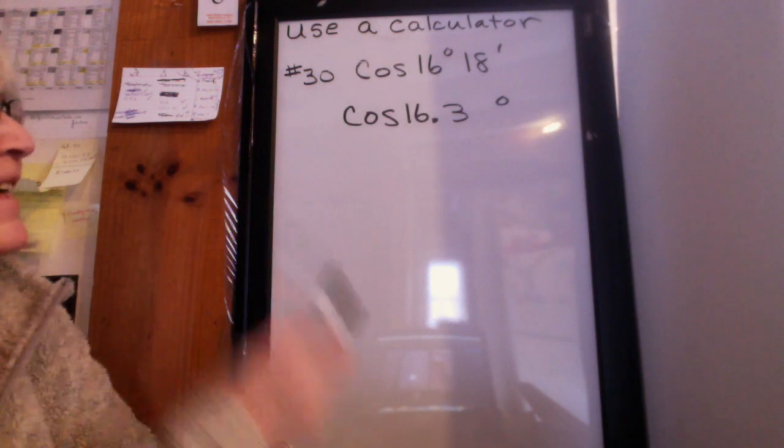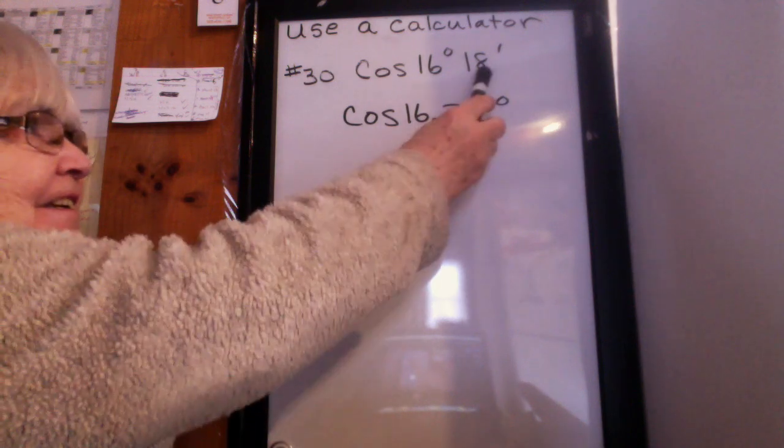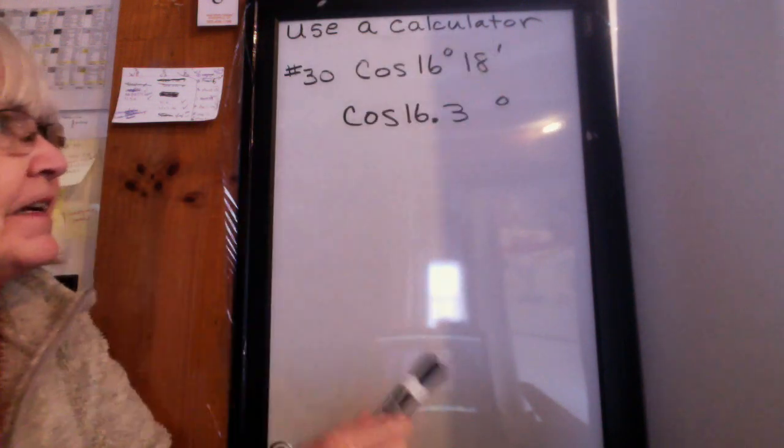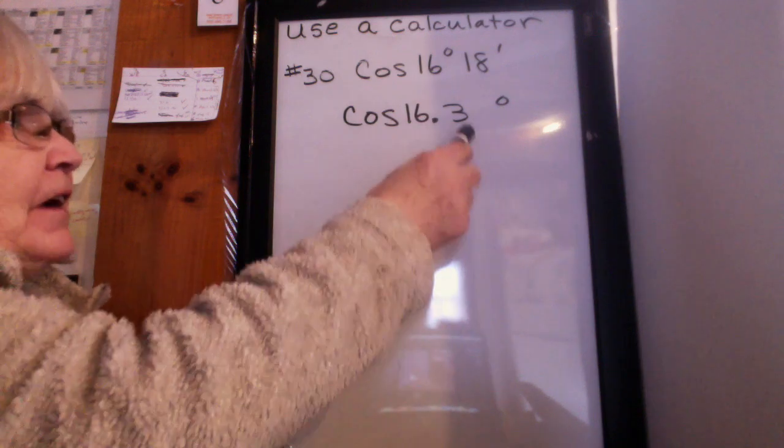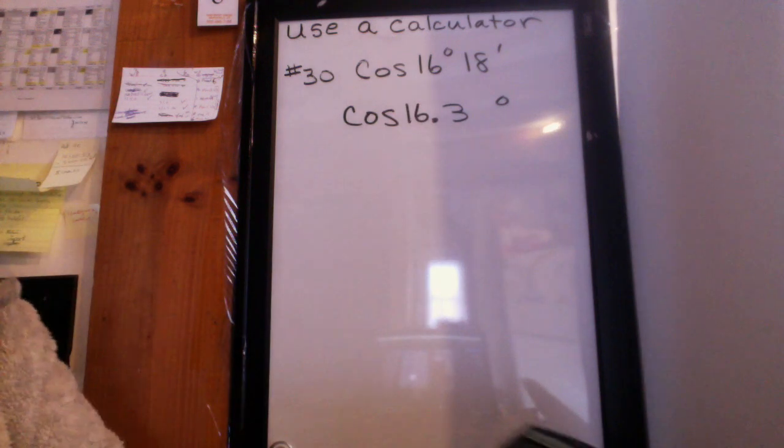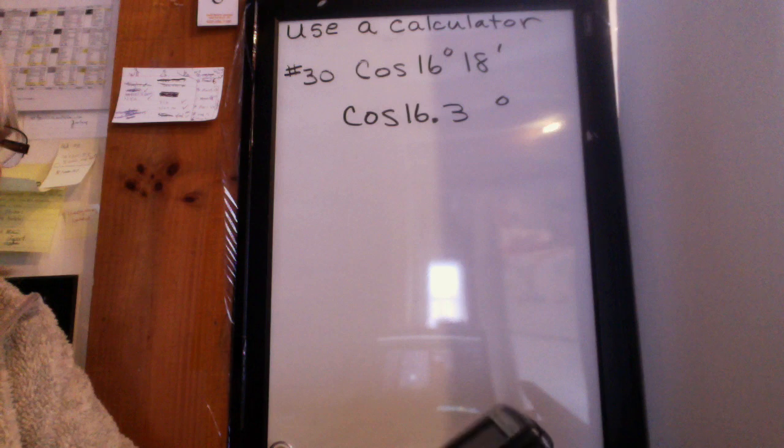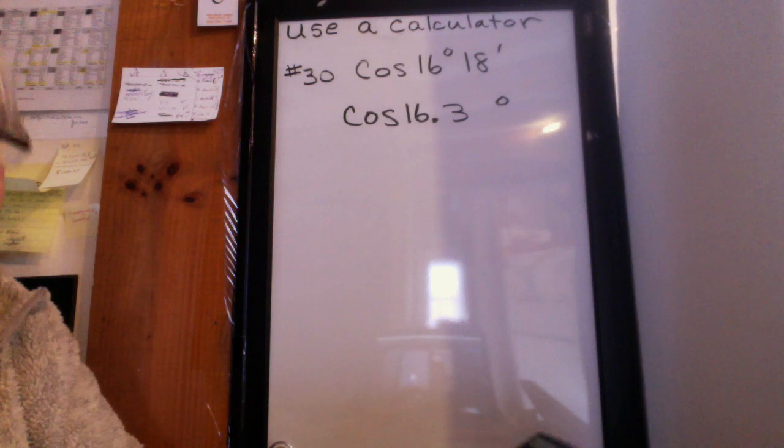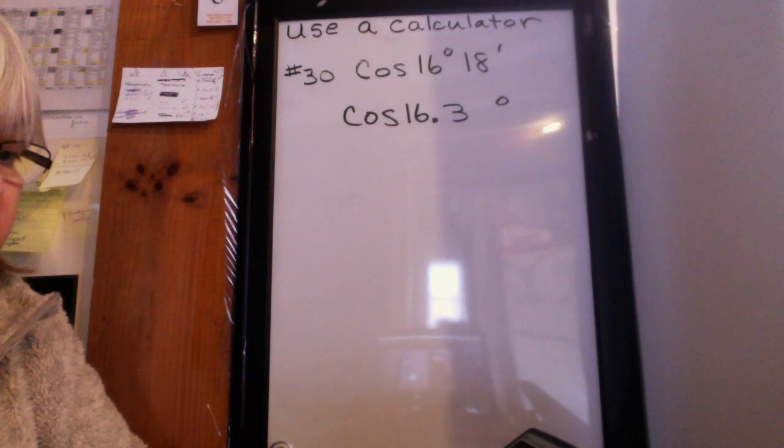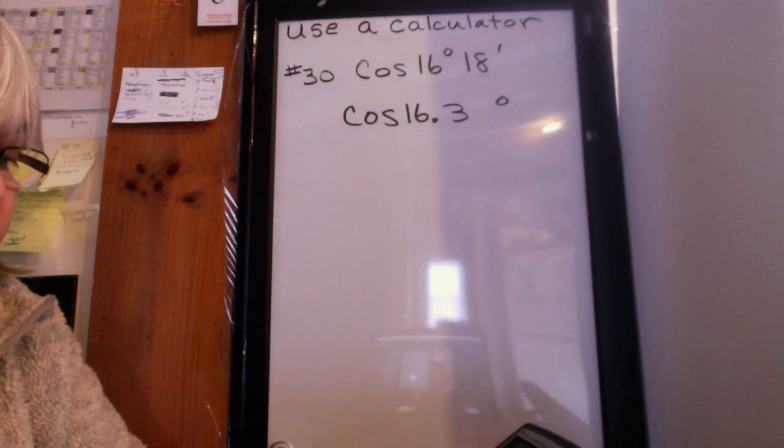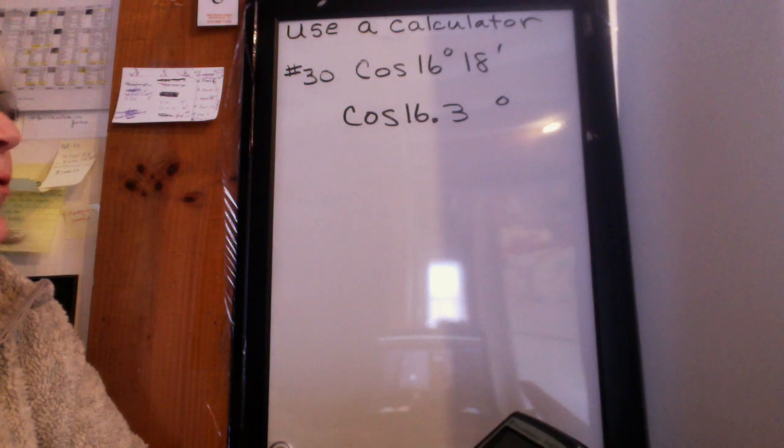So the first thing I need to do though is I need to change the 18 minutes to a decimal, and that comes out to point 3. How do I know that? Here's how to do it. Turn on your calculator and do 18 divided by 60, and you get 0.3.